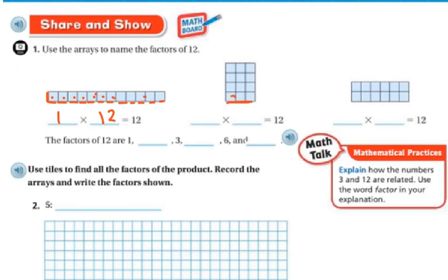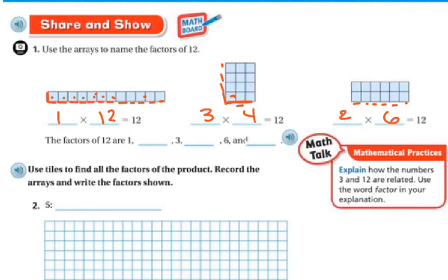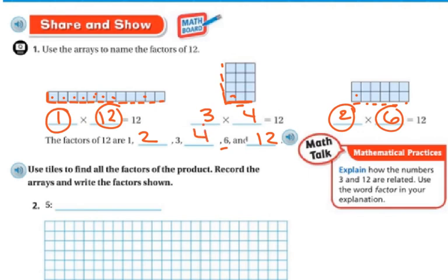The next array has 3 rows going across 4 tiles — so 3 times 4 is 12. The other one has 2 rows going across 6 tiles — so 2 times 6 is 12. If I were to count these little boxes up, I would have 12 boxes. So my factors of 12 are 1 and 12, 2 and 6, and 3 and 4. My factors are 1, 2, 3, 4, 6, and 12.